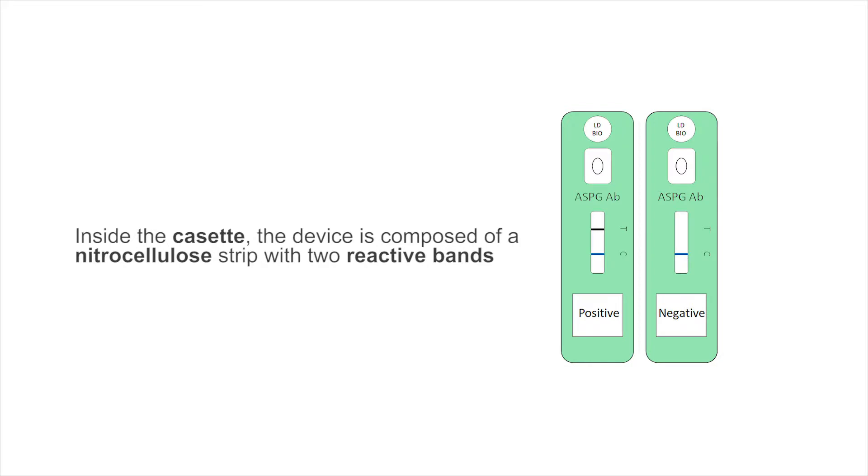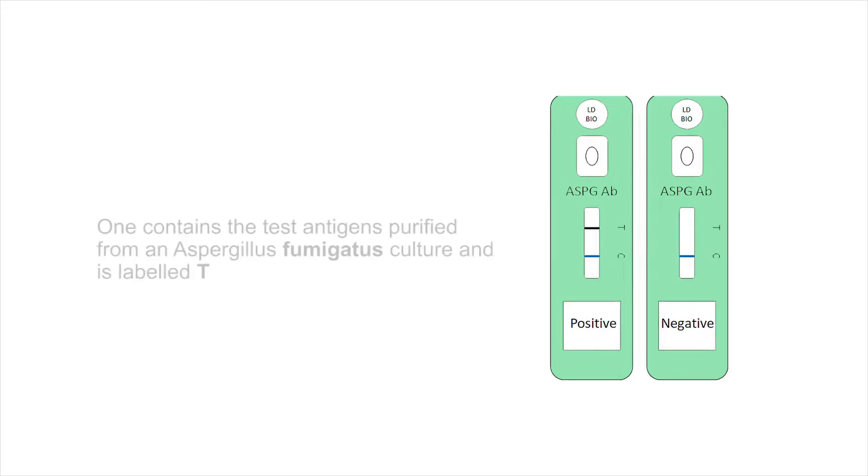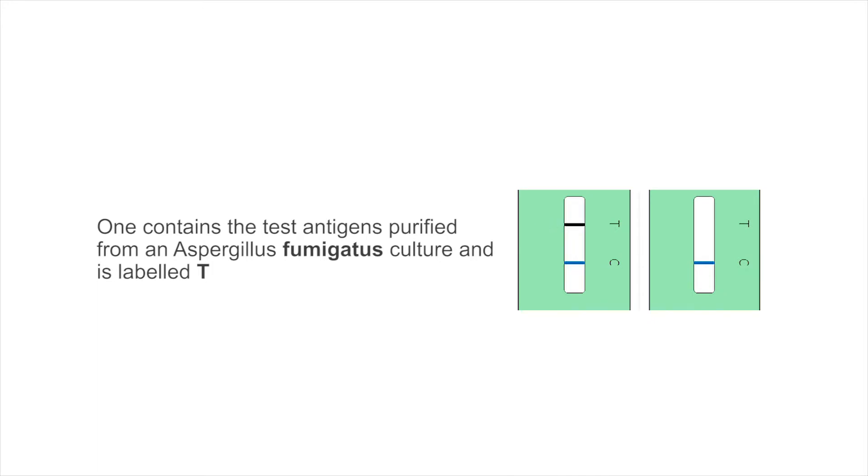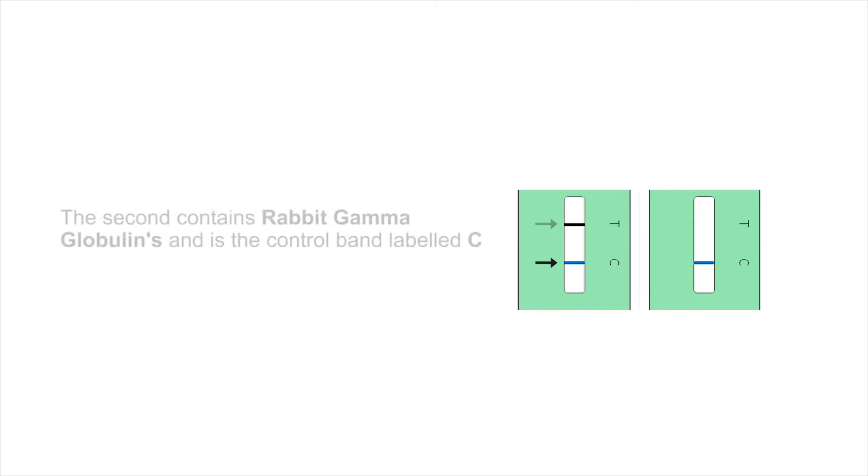Inside the cassette, the device is composed of a nitrocellulose strip with two reactive bands. One contains the test antigens purified from an Aspergillus fumigatus culture and is labeled T. The second contains rabbit gamma globulins and is the control band labeled C.